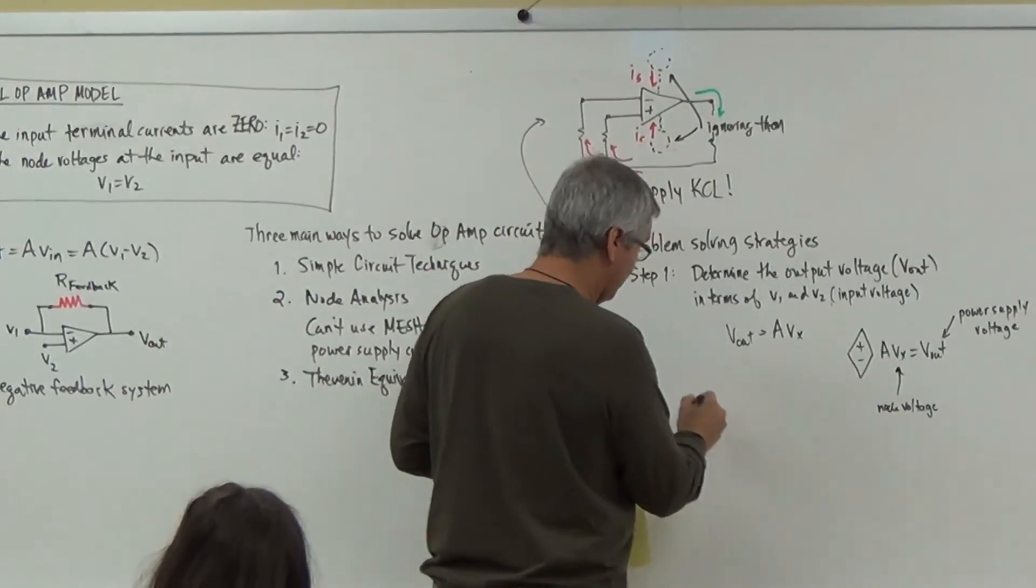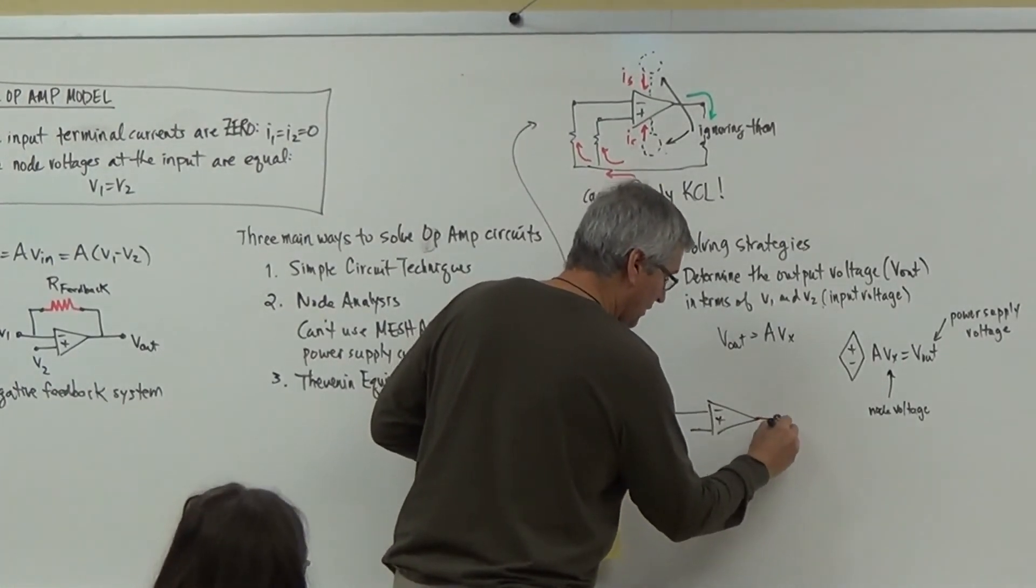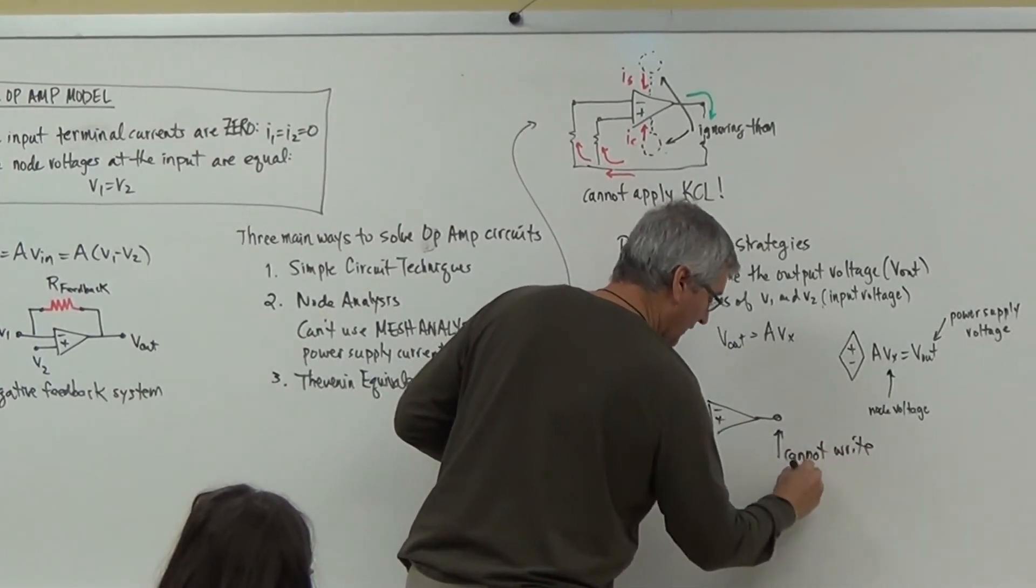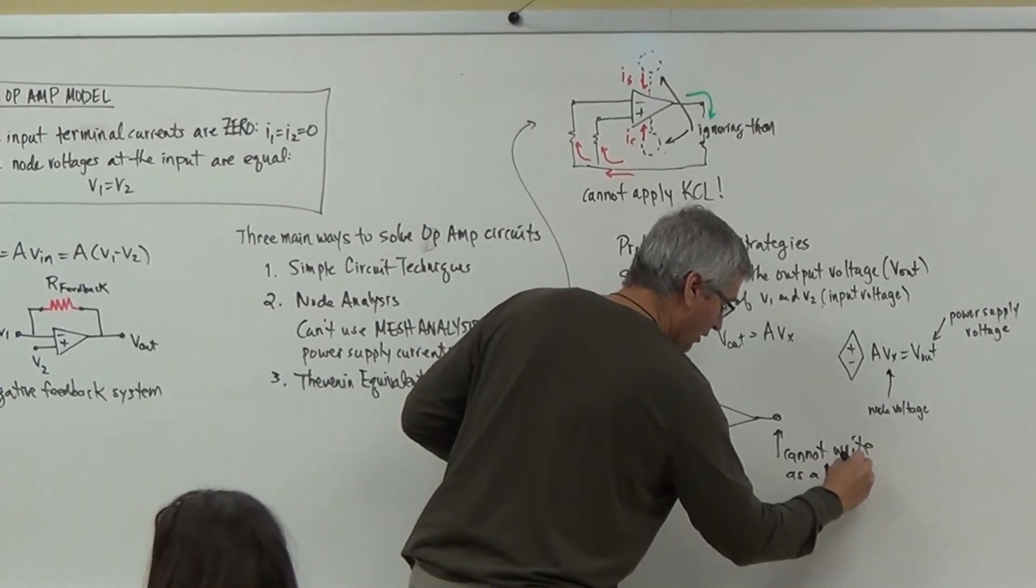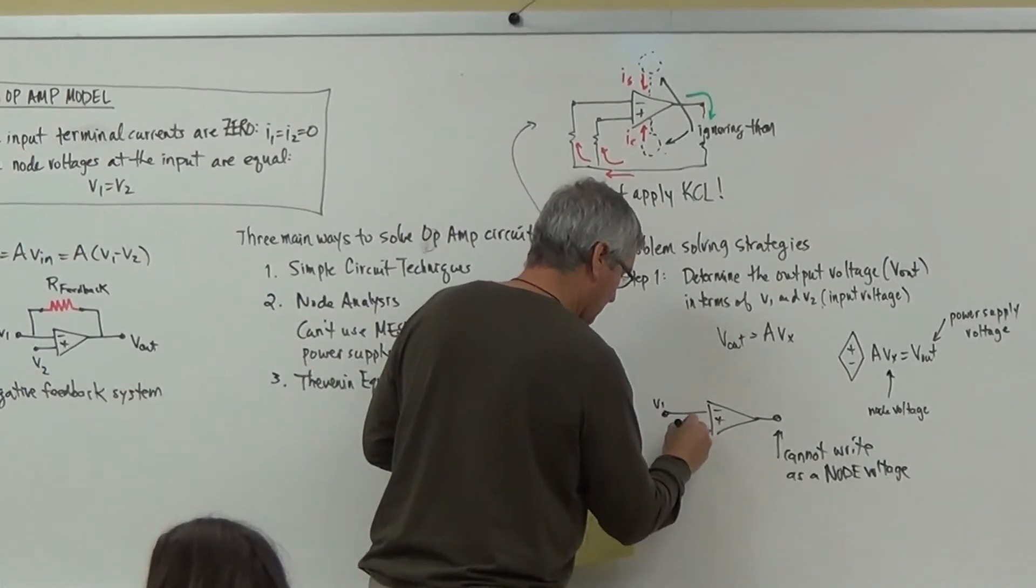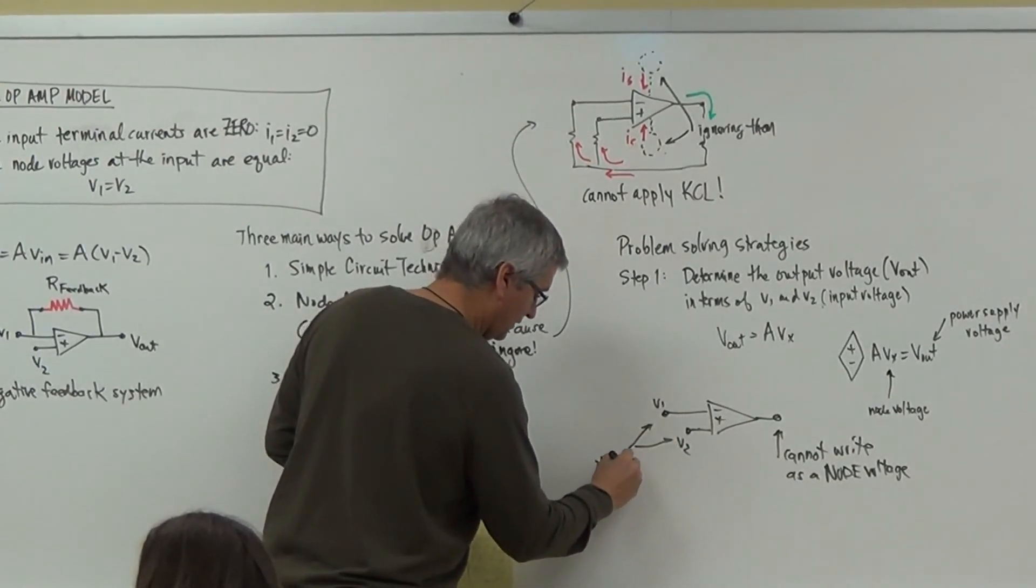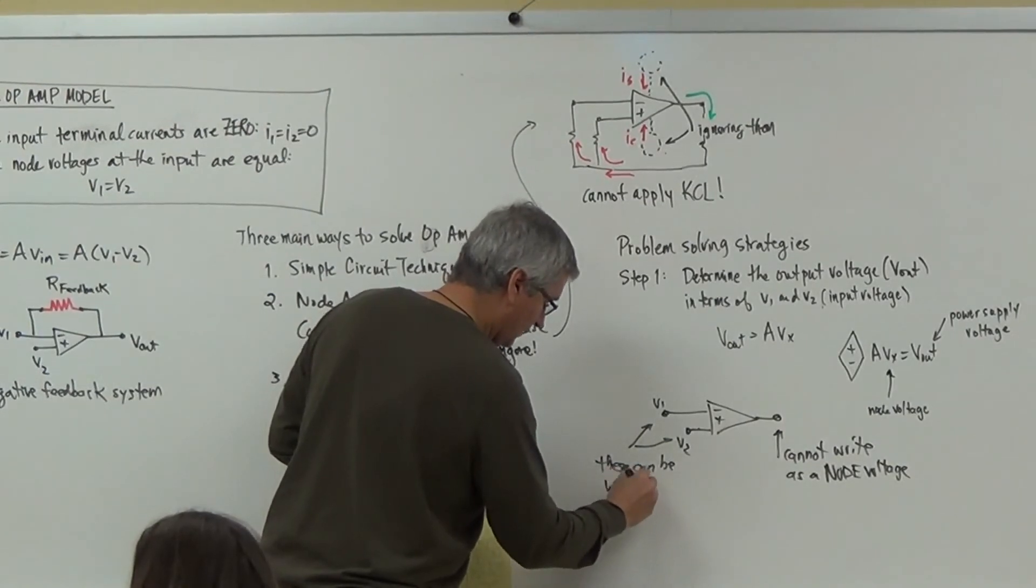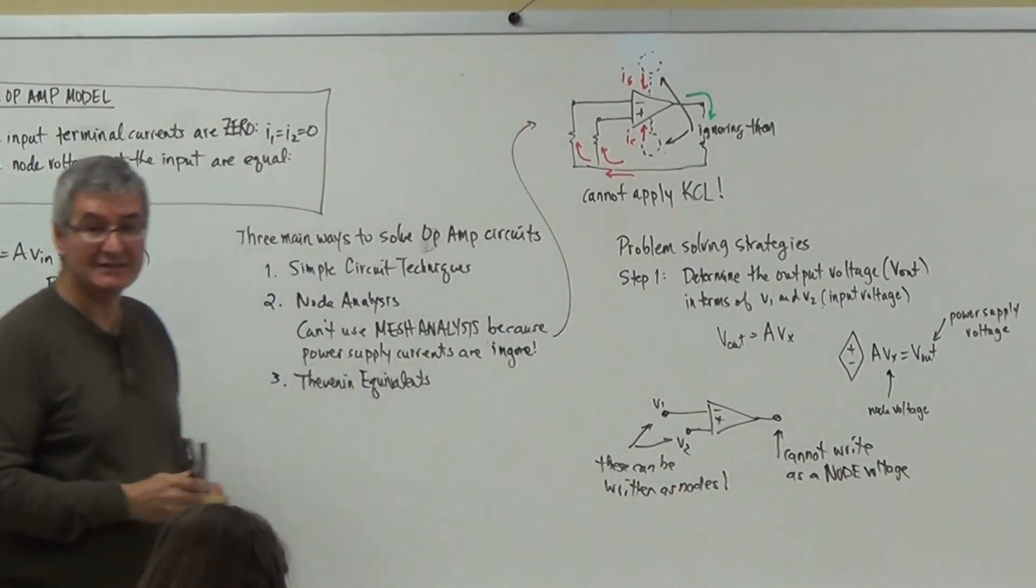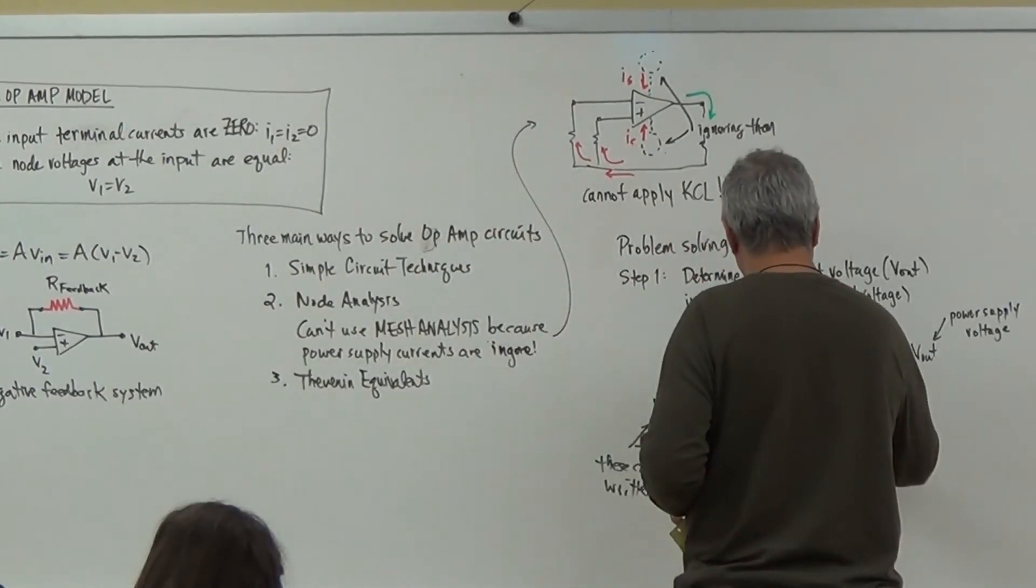So the only thing that I can solve for are the node voltages related to Vx. What's related to Vx? V1 and Vx. So it's very common in the beginning for people to try to write that as a node equation. You can't. And it's because it looks like a node right there. But that's the value of the op-amp. That is the power supply value. It just looks different. So in other words what I'm saying here is that when you have this guy, cannot write as a node voltage. These can be written as nodes. That's the one thing you've got to remember here. You can't touch this V_out.